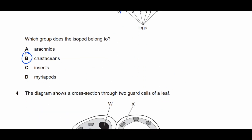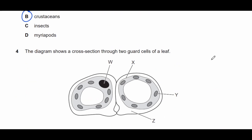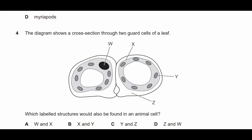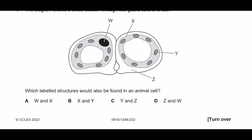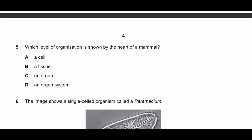Question four: the diagram shows a cross section through two guard cells of a leaf. Which labelled structures will also be found in an animal cell? W is a nucleus, X is cell membrane, Y is chloroplast, and Z is cell wall. Only W and X are found in animal cells, therefore the answer is A.